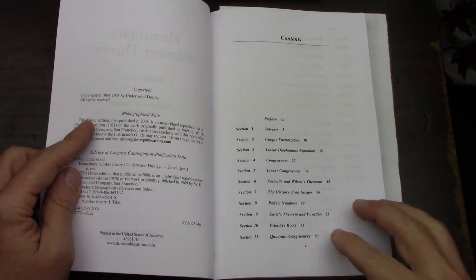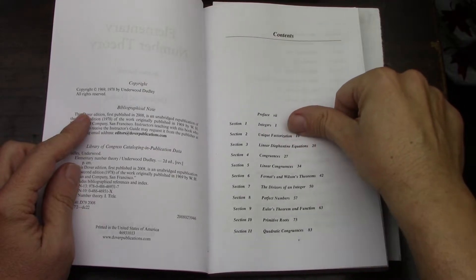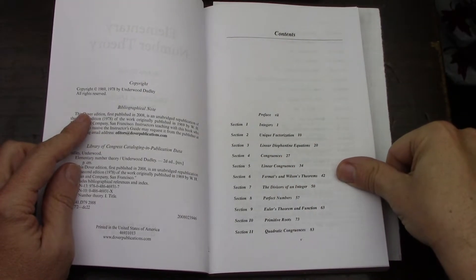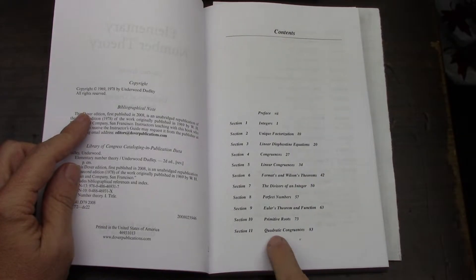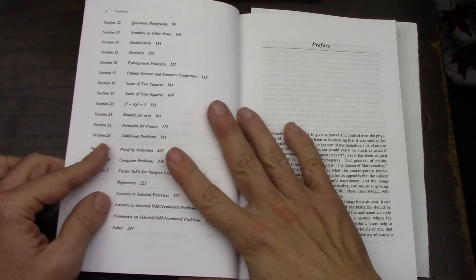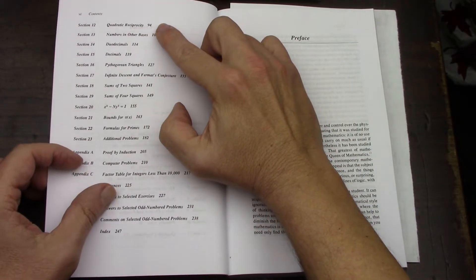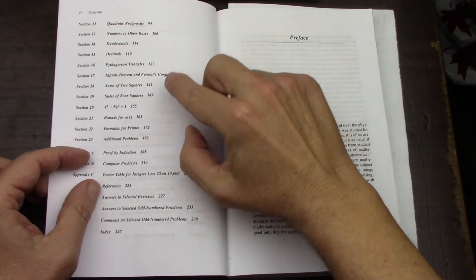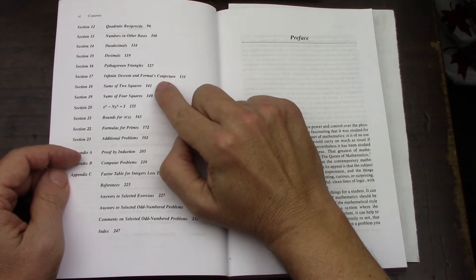It's got all the major things. It's got Diophantine Equations, Factorization, Congruences, Linear, Fermat and Wilson's Theorem, The Divisors, Perfect Numbers, Euler's Theorem, Primitive Roots, which I love, Quadratic Congruences, Quadratic Reciprocity, very important to me, one of my favorite theorems of all time, Numbers and Other Bases, Duodecimals, Decimals, Pythagorean Triangles, Infinite Descent and Fermat's Conjecture.